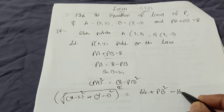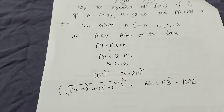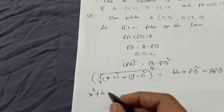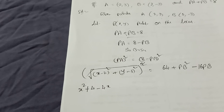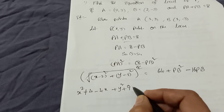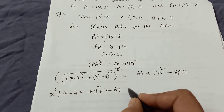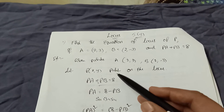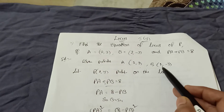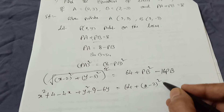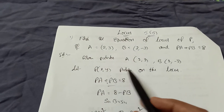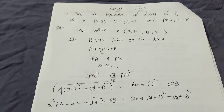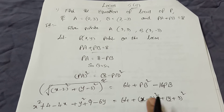PB squared is the distance between P and B. P is (x, y) and B is (2, -3), so PB² equals (x - 2)² plus (y + 3)² — because minus minus gives plus — which expands to x² + 4 - 4x plus y² + 9 + 6y.